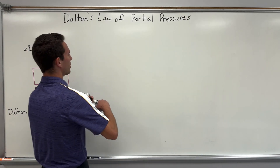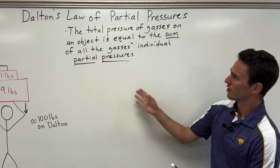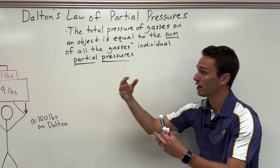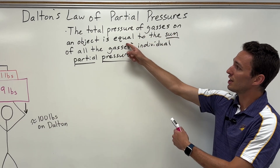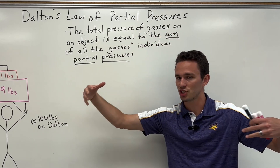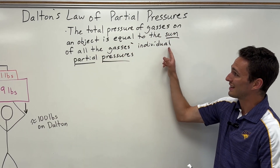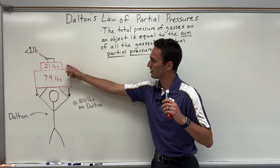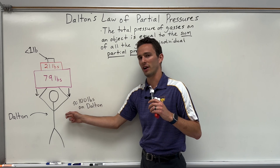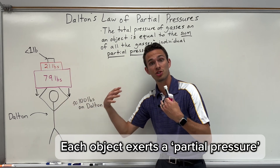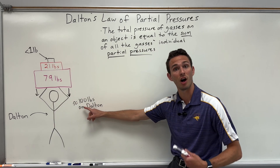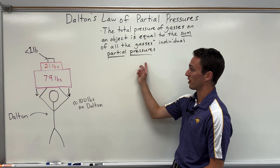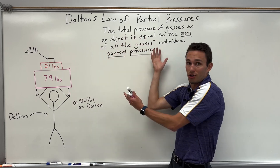So let me define it quickly. Dalton's Law of Partial Pressures states that the total pressure of gases on an object — gases being like air — the pressure exerted on you by those gases is equal to the sum, or addition, of all of the gases' individual partial pressures. Think of each individual weight that Dalton was carrying — those are partial pressures on him, summing up to the total pressure of 100 pounds. So the total pressure being 100 pounds, the partial pressures being 79, 21, and less than 1 — that is Dalton's Law.